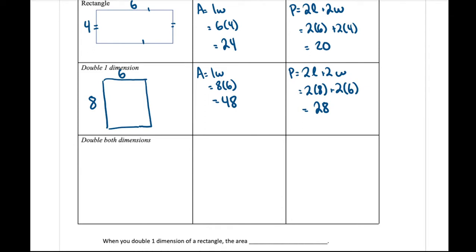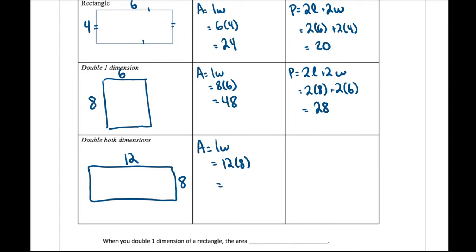If we double both dimensions, our rectangle would now be 8 by 12 — 8 was what we doubled from the original one dimension, and 12 is the other dimension now doubled. For area: length times width, 12 times 8 is 96. For perimeter: 2 times 12 plus 2 times 8 gives us 24 plus 16, which is 40.